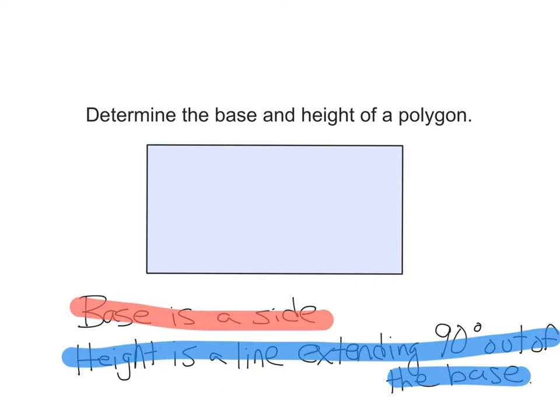And in this case with our rectangle, we have our base highlighted. We can just use the side as the height because I know that these two lines right here are intersecting at a 90 degree angle. So we have our base is a side and our height is extending 90 degrees out of the base, and that line can be a side.